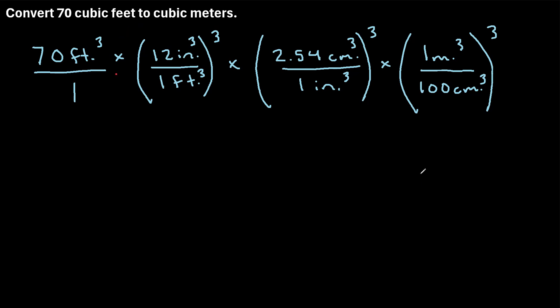what we'll notice is that all of the units will cancel out except for the meters. So this feet cubed in the numerator of this expression will cancel out with the feet cubed in the denominator of this expression. And then this inches cubed will cancel out with this inches cubed. These centimeters cubed will cancel out with these centimeters cubed.